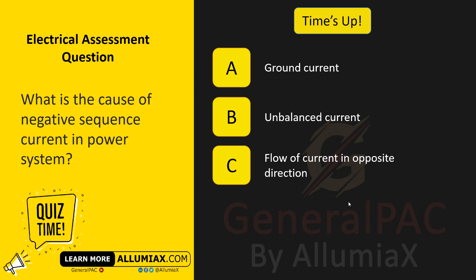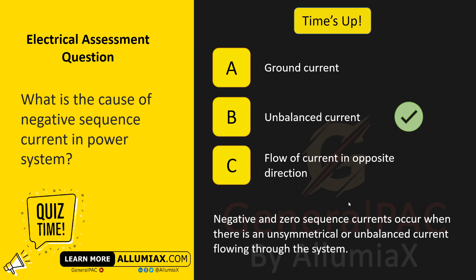The answer is B — unbalanced current. Negative and zero-sequence currents occur when there is an unsymmetrical or unbalanced current flowing through the system.